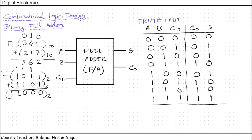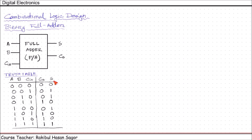We have assigned symbols to inputs and outputs and constructed the truth table for all input combinations. Now we need to get the simplified Boolean function for output variables S and C0. To get the simplified function, we will use Karnaugh maps. Let us solve the Karnaugh map for S first, with three variables A, B, and C in.